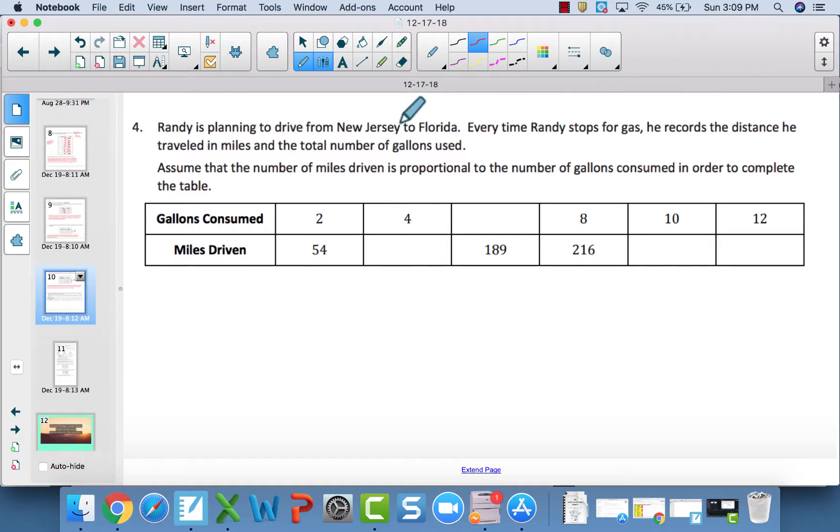Number 4 says Randy is planning to drive from New Jersey to Florida. Every time Randy stops for gas, he records the distance he traveled in miles and the total number of gallons used. Assume that the number of miles driven is proportional to the number of gallons. That is an incredibly important point because the only reason we can fill out this table is because we're assuming proportionality, meaning we are assuming that multiplicative number is consistent. We cannot assume unless the question tells us to.